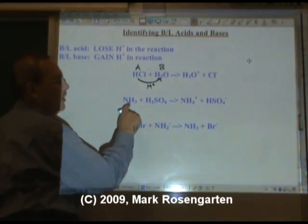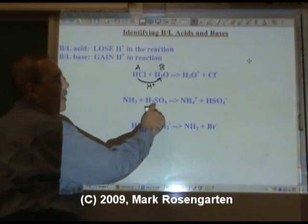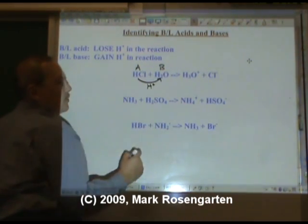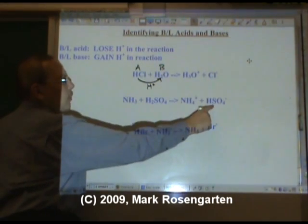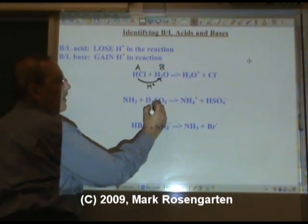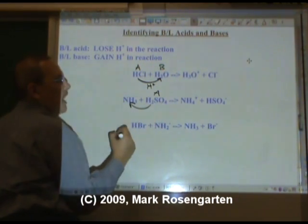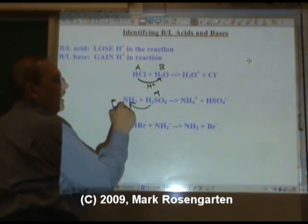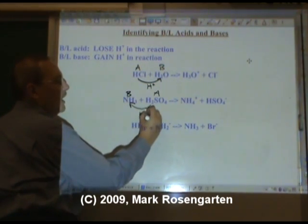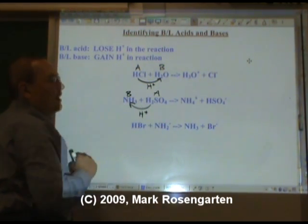In this reaction, NH3 becomes NH4+1 and H2SO4 becomes HSO4-minus 1. H2SO4 lost the hydrogen, NH3 gained it. Therefore, the H2SO4 is acting as the Brønsted-Lowry acid and the NH3 is acting as the Brønsted-Lowry base. The H-plus is lost by the sulfuric acid and gained by the ammonia.